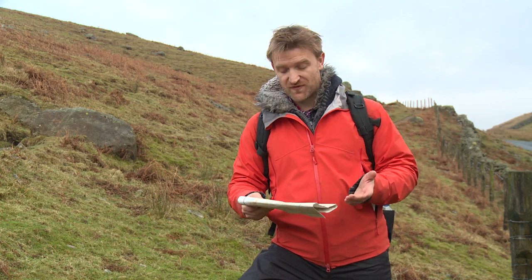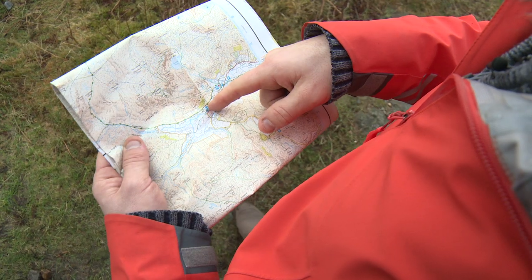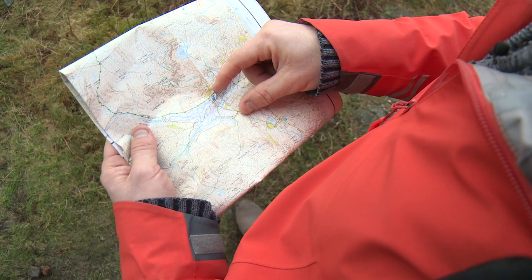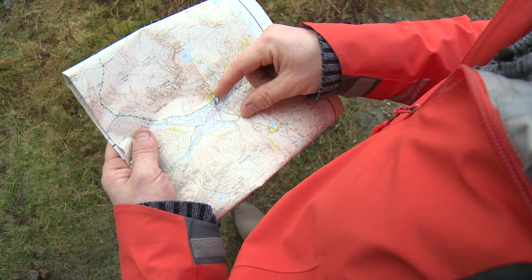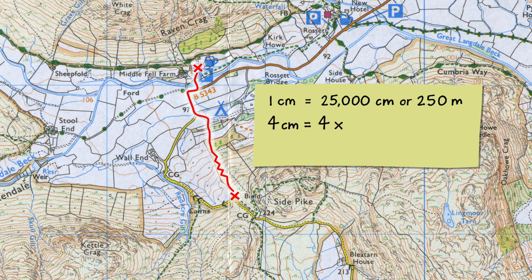I've got another six-figure grid reference here: 285061, and it's for my end destination — my hotel. So we're heading north for four centimetres. This is a scale map with a ratio of 1 to 25,000, so 1 centimetre on the map equals 25,000 centimetres, or 250 metres in the real world. So 4 centimetres equals 4 times 250 metres, which equals 1,000 metres — and 1,000 metres equals 1 kilometre.